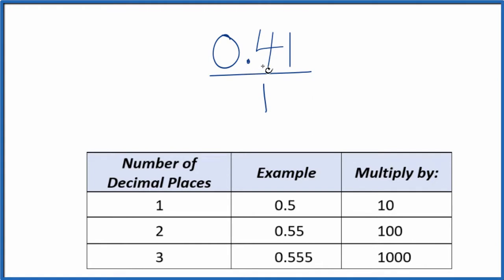What we need to do is get this 0.41 to a whole number, and we have two decimal places. We're just going to multiply by 100. So 100 times 0.41, that equals 41. So we have our whole number.